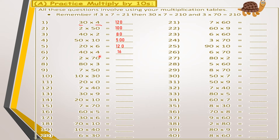For 40 multiplied by 4: 4 by 4 equals 16, drop down the zero, answer is 160. For 20 multiplied by 7: 2 by 7 equals 14, drop down the zero, answer is 140. For 80 multiplied by 3: 8 by 3 equals 24, drop down the zero — 240. For 70 multiplied by 5: 7 by 5 equals 35, drop down the zero — 350.